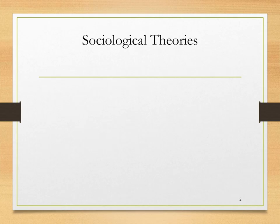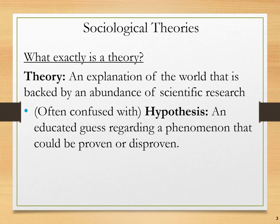First let's look at those basic theories and even the idea of a theory. What exactly is a theory? The definition of a theory is an explanation of the world that is backed by an abundance of scientific research. That is the scientific definition of the word theory. Theory is often confused with a hypothesis, which is an educated guess regarding a phenomena that could be proven or disproven.